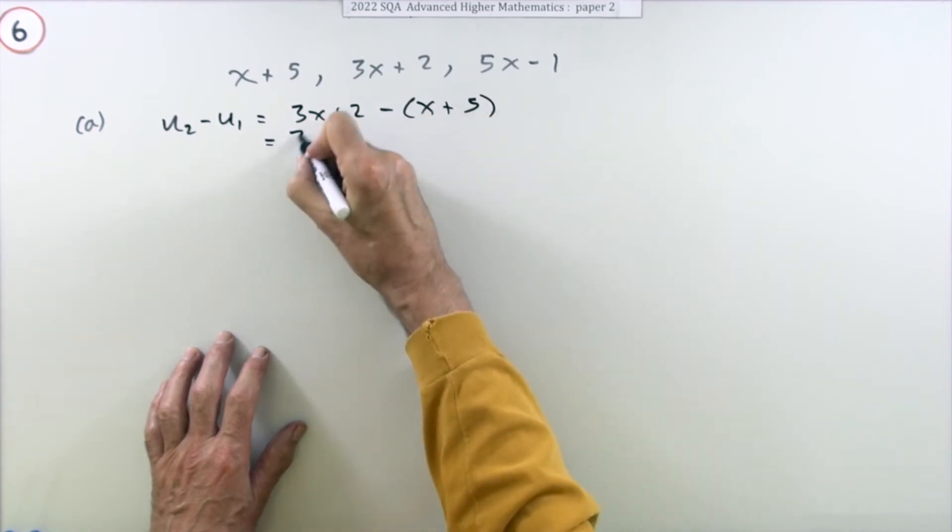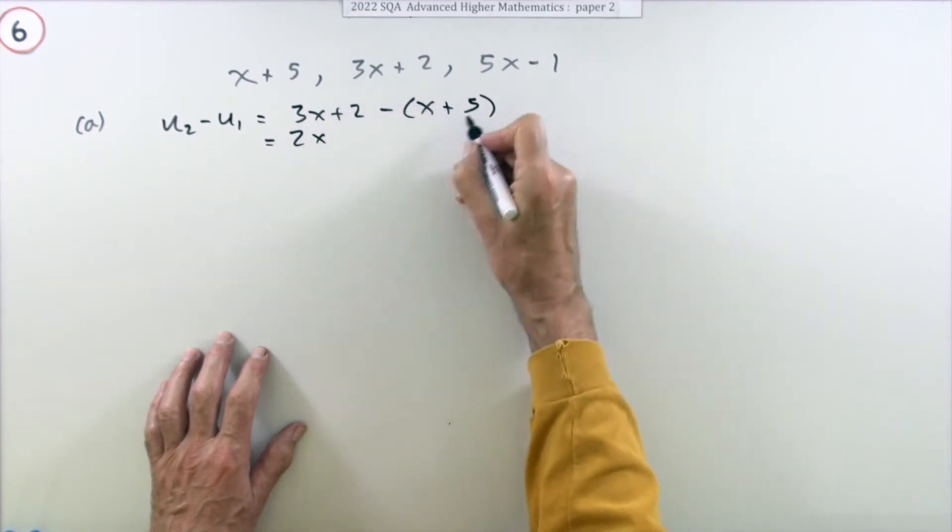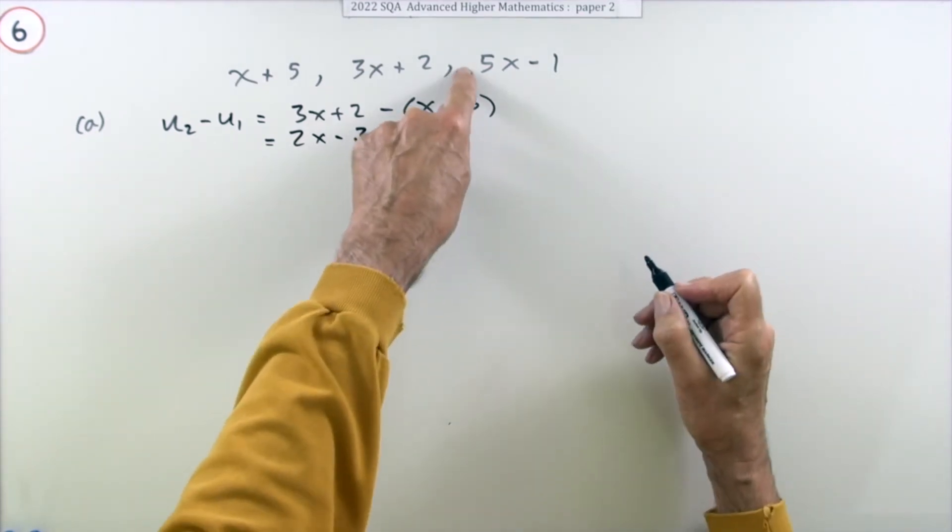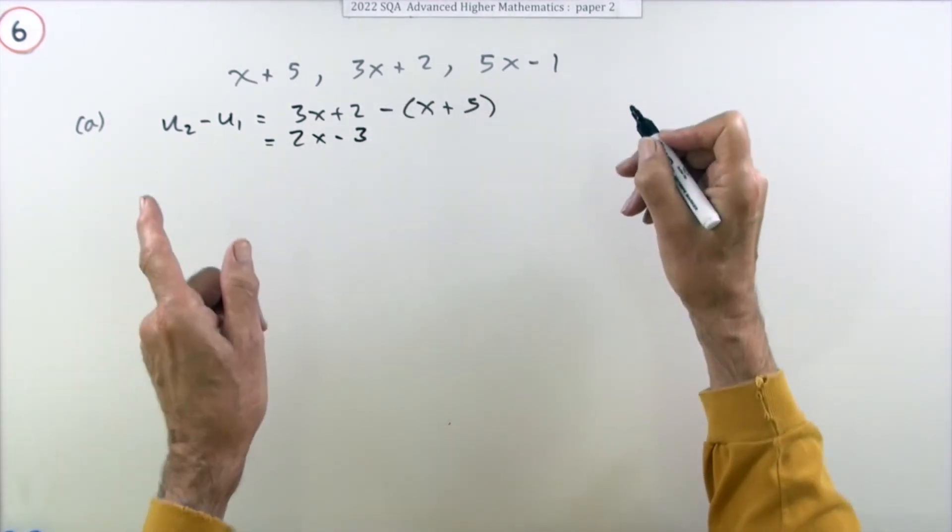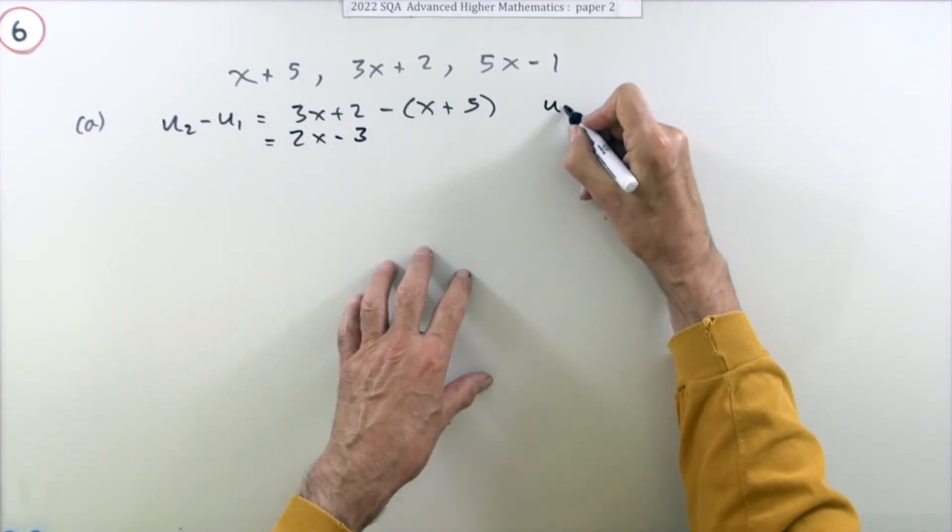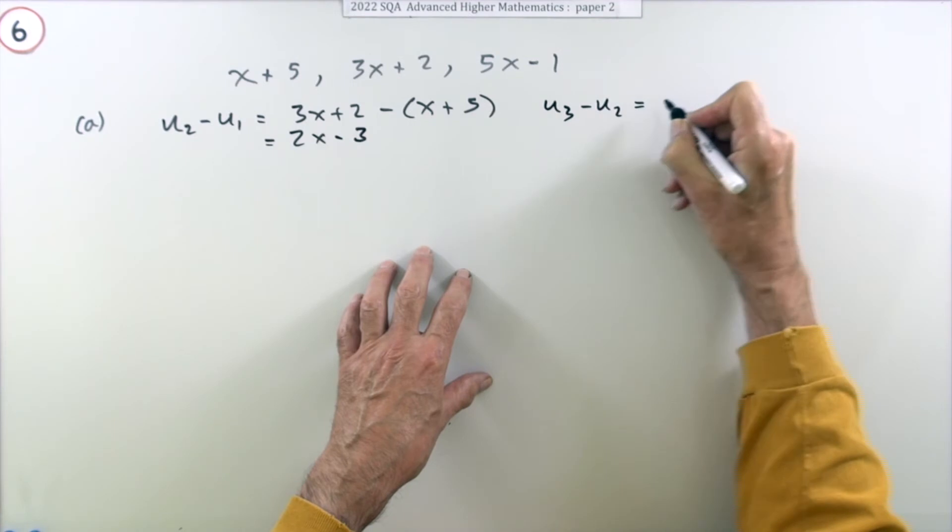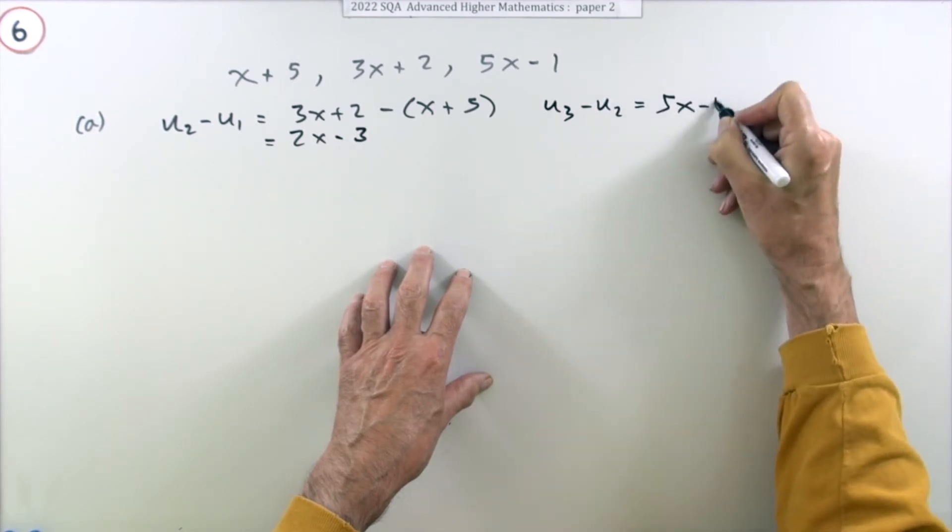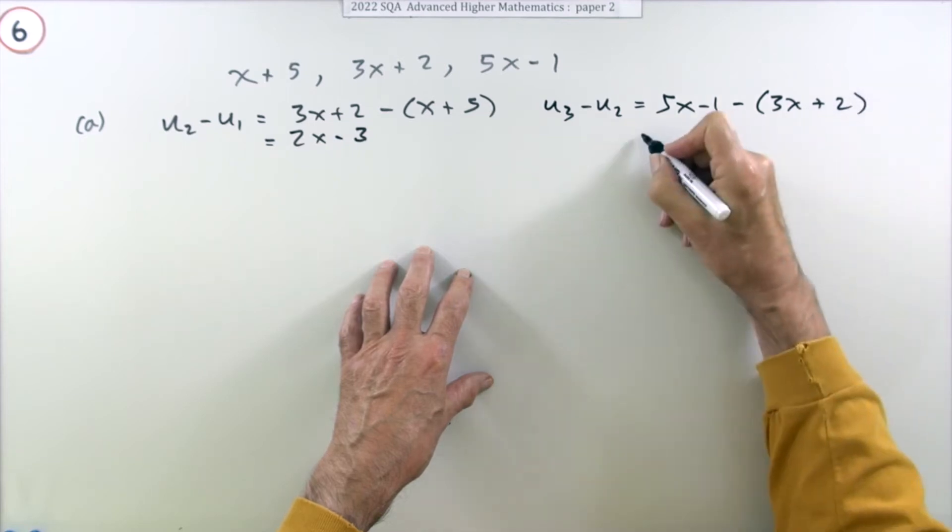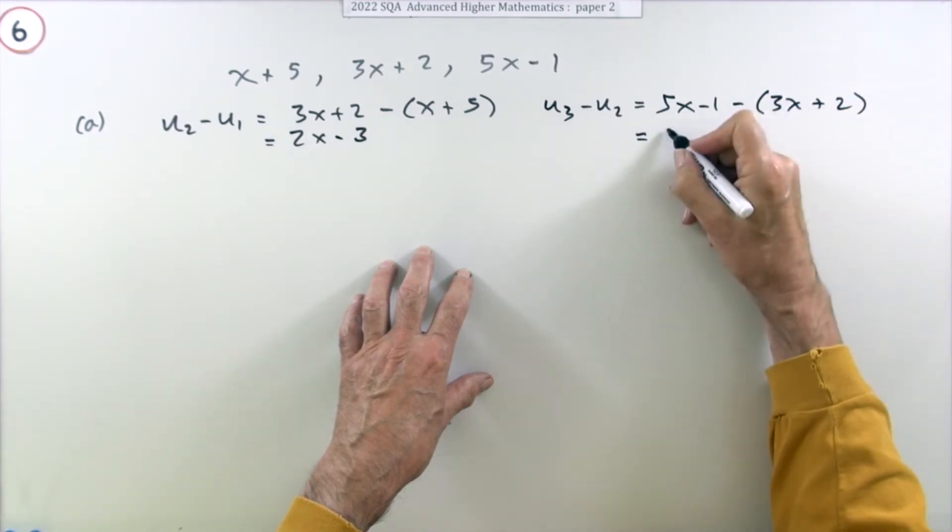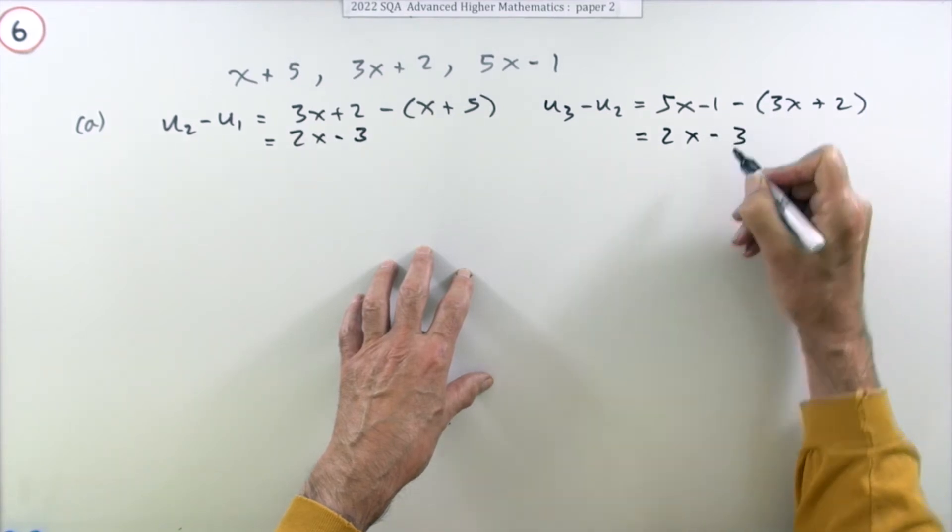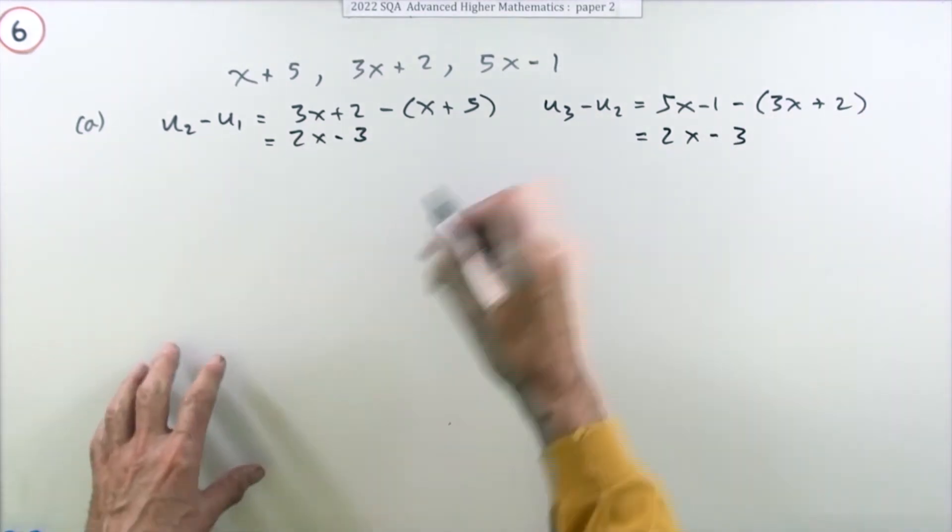What's u2 minus u1? Well, that'll be 3x plus 2 minus x plus 5, so it's 3x minus x is 2x, and that's 2 take away 5 which is minus 3. Now check what was added here. What's u3 minus u2? Well, that'll be 5x minus 1 take away 3x plus 2. Well, 5 take away 3 is 2x, and negative 1 take away 2 is minus 3.